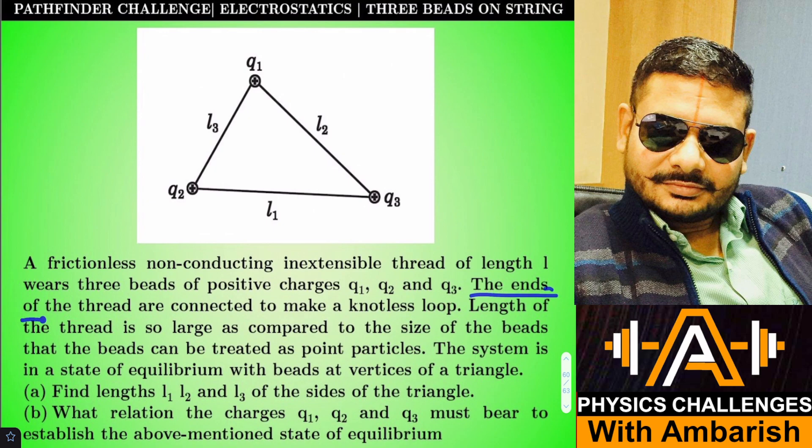The ends of the thread are connected to make a knotless loop. The length of the thread is so large as compared to the size of the beads that the beads can be treated like point particles. The system is in a state of equilibrium with beads at vertices of a triangle. Find the lengths l1, l2, and l3 of the sides of the triangle and what relation the charges q1, q2, and q3 must bear to establish the above mentioned state of equilibrium.